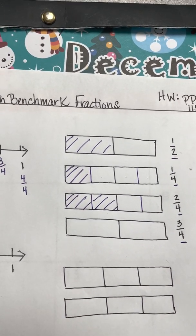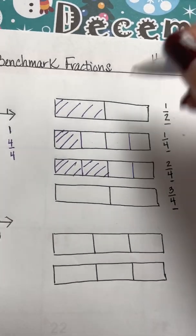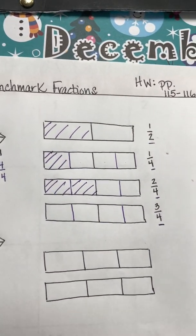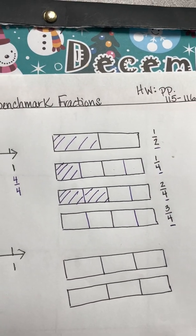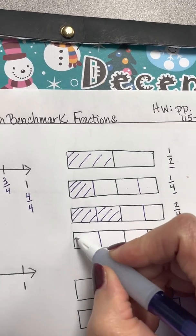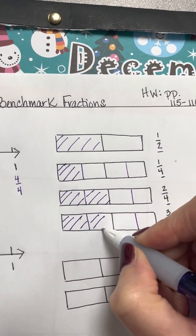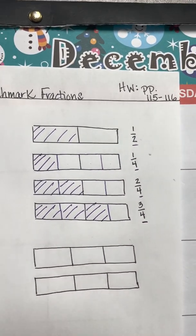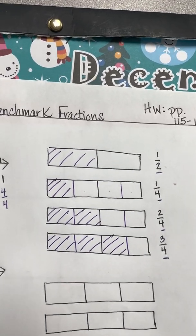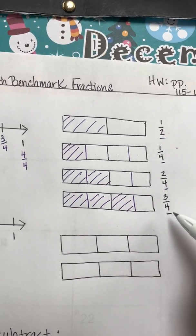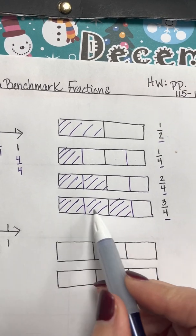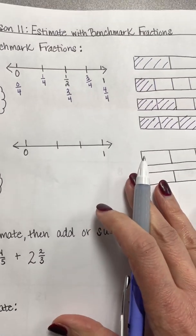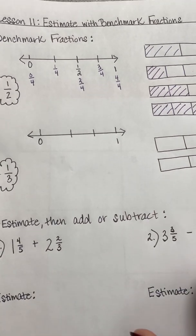Now let's look at three-fourths. We split the model into four equal pieces by splitting each half in half again. We shade three out of four: one, two — that's the halfway point — and then three. You can see we're one-fourth bigger than one-half. If we went up to four-fourths, of course it would be all shaded and that would be one whole.